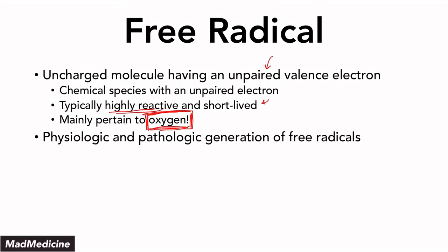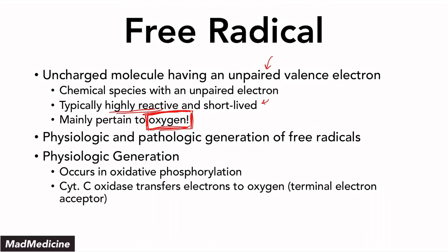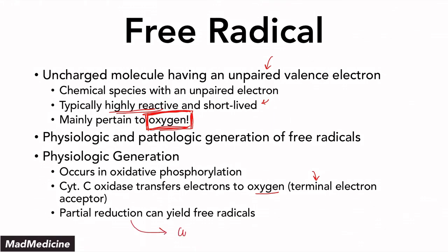So you have physiologic and pathologic generation of free radicals. The physiologic generation is going to be dependent on oxidative phosphorylation primarily. That means cytochrome C oxidase is going to transfer electrons to oxygen molecules in order to generate ATP. Oxygen is the terminal electron acceptor in oxidative phosphorylation, and it's going to continuously accept electrons until you form water. A partial reduction in oxidative phosphorylation will always yield free radicals until such a time where you have a complete reduction.